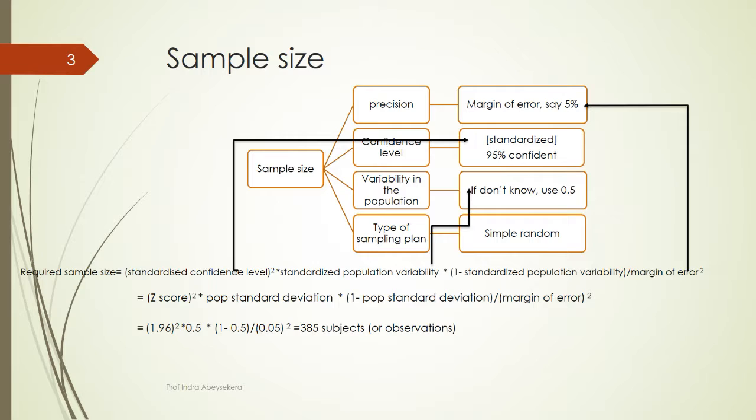There could be different levels of heterogeneity, and if there are different levels of heterogeneity we require more sampling. So when we want to determine the sample size, we take these four aspects into consideration.